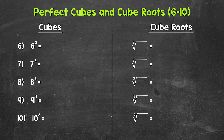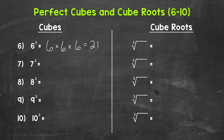Let's jump into the sixth through tenth perfect cubes and cube roots, starting with number six where we have six cubed. That means six times six times six. Six times six is thirty-six, times six equals two hundred sixteen. Six cubed equals two hundred sixteen, which means the cube root of two hundred sixteen equals six.